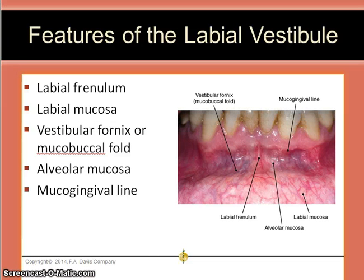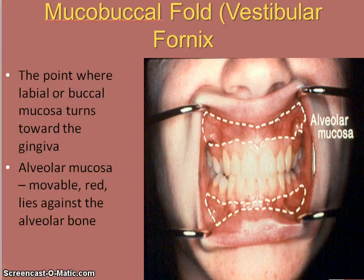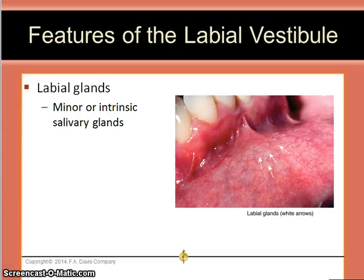The labial vestibule has several structures: the labial frenum, the labial mucosa, the vestibular fornix (also known as the mucobuccal fold), alveolar mucosa, and the mucogingival line. The mucobuccal fold is the point where the labial or buccal mucosa turns towards the attached gingiva. The alveolar mucosa is movable, red, and lies against the bone. The labial vestibule also has minor intrinsic salivary glands.